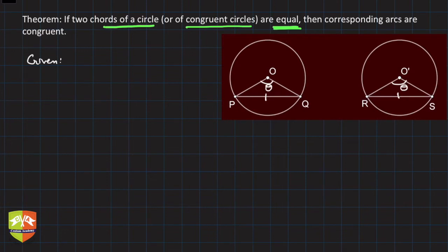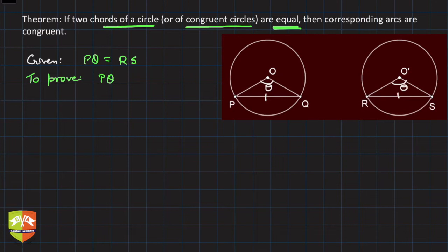What is given? It is given that PQ is equal to RS — two chords are equal. And what do we need to prove? We need to prove that arc PQ is congruent to arc RS. This is what we need to prove.